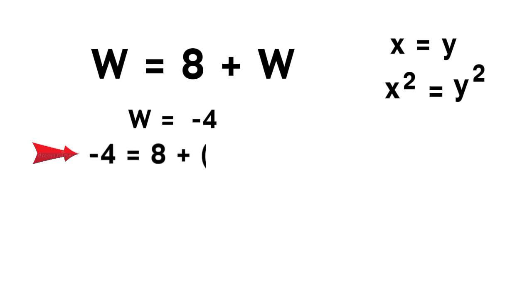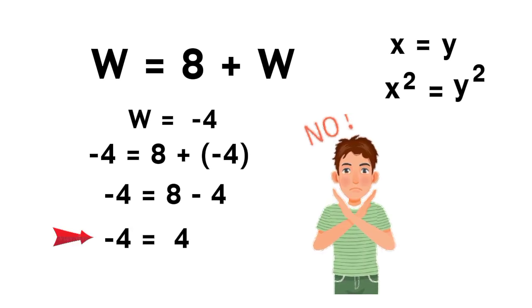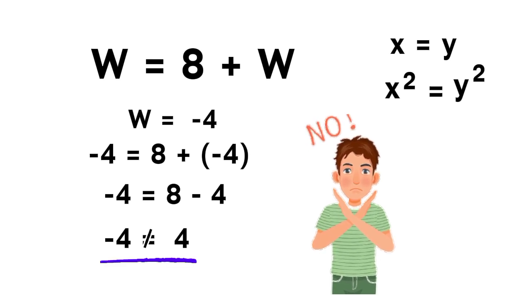Negative 4 equals 8 plus negative 4, which becomes negative 4 equals 8 minus 4. So we get negative 4 equals 4. Oh no, that's definitely not true. Negative 4 does not equal 4.